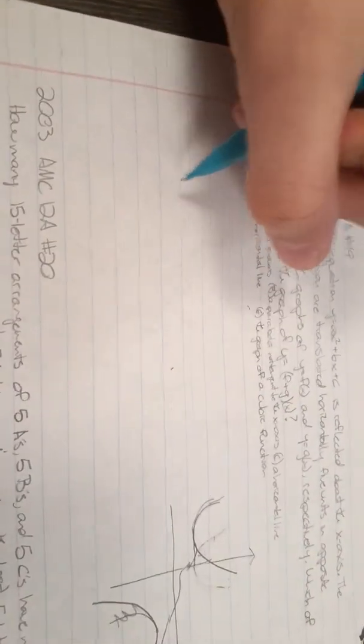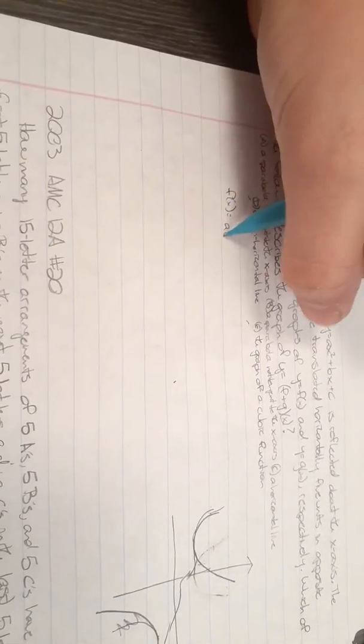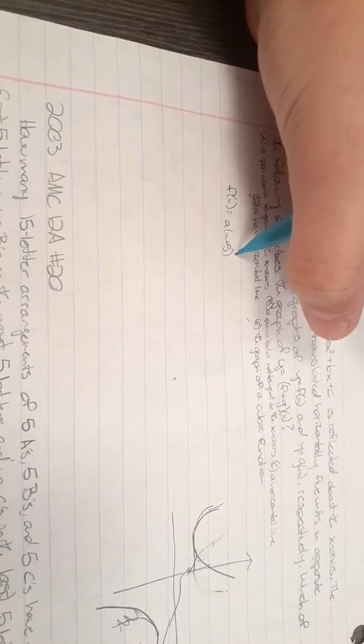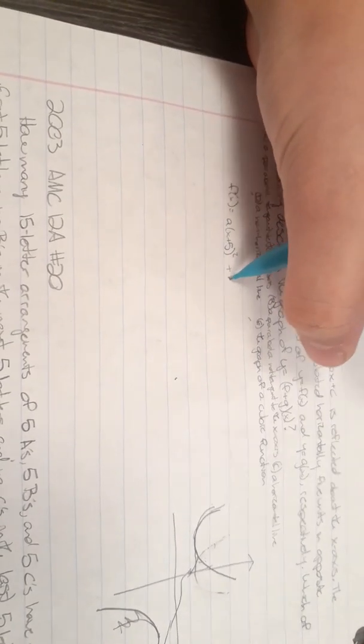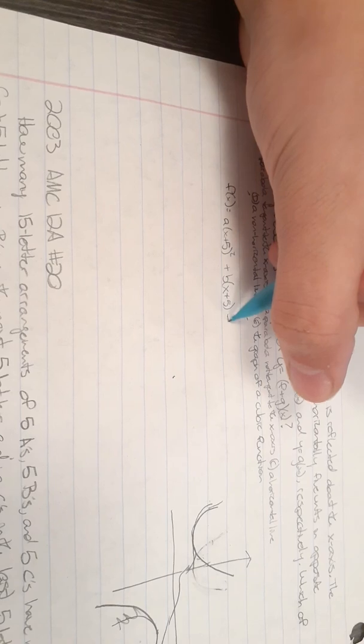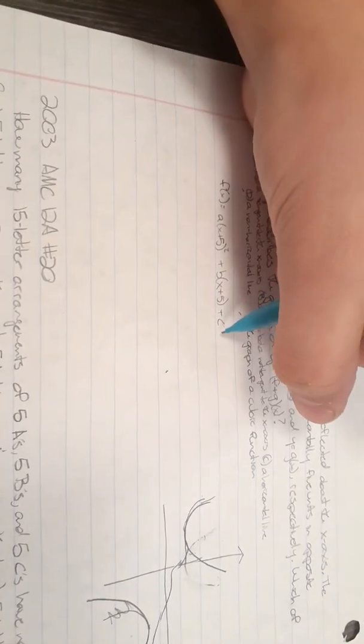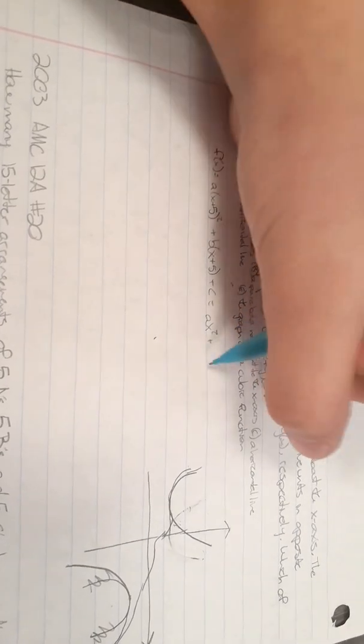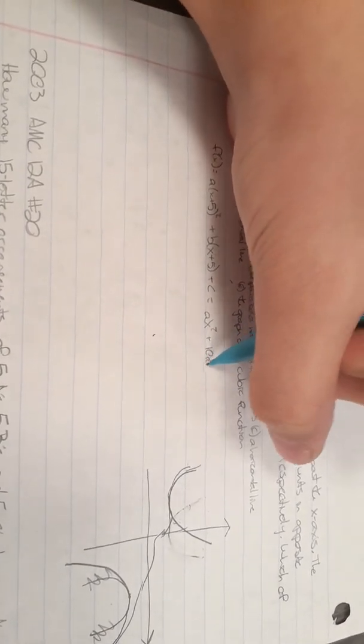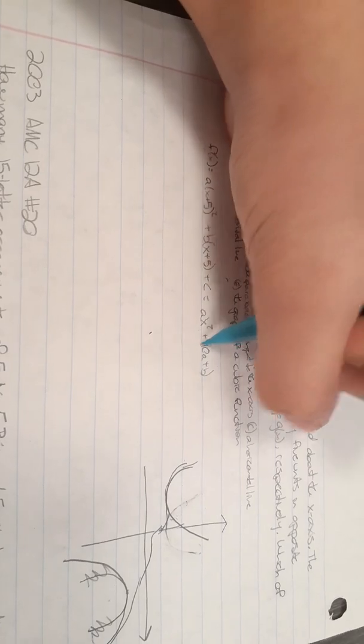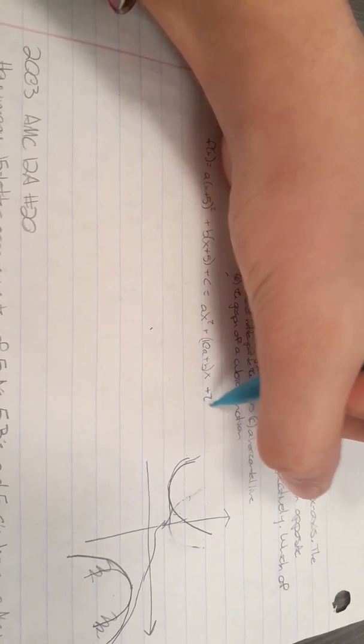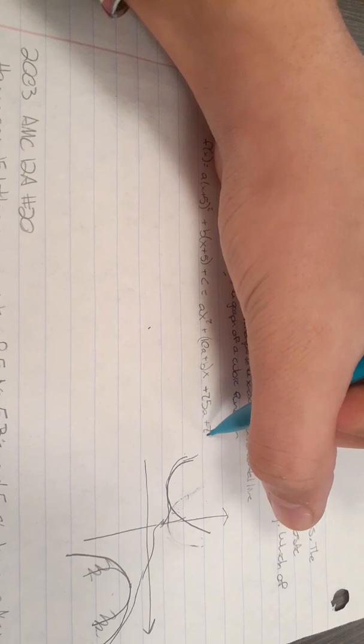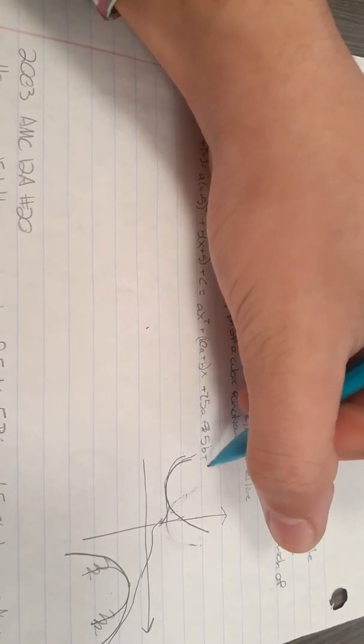I'm going to show it to you the algebraic way. So let's call f of x equals a times x plus 5 squared plus b times x plus 5 plus c. That's going to end up being ax squared plus 10a plus b times x plus 25a plus 5b plus c.